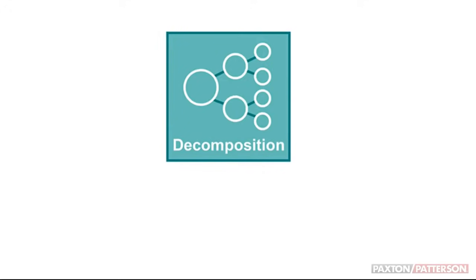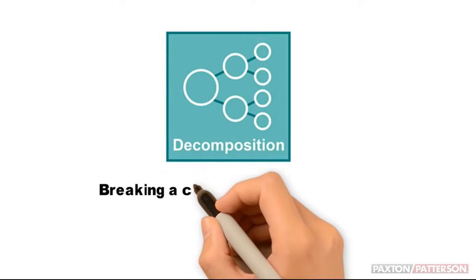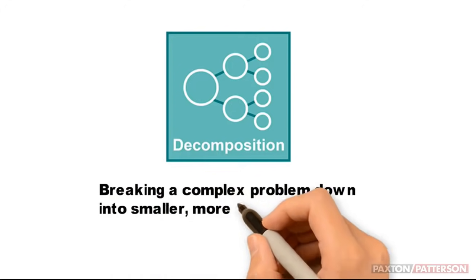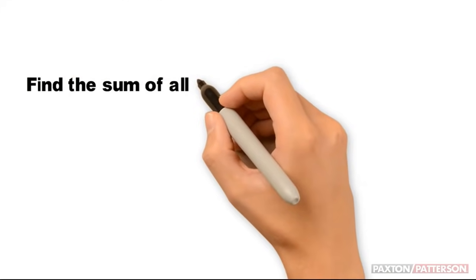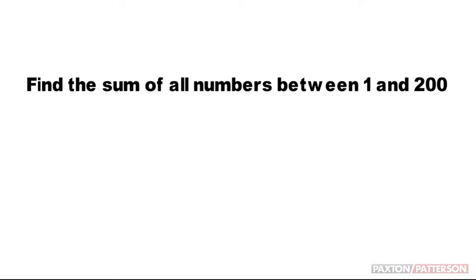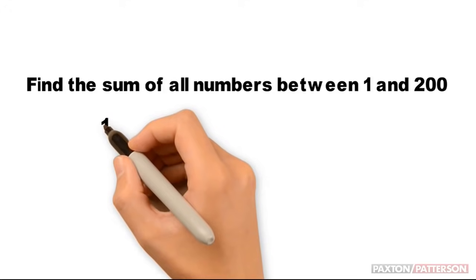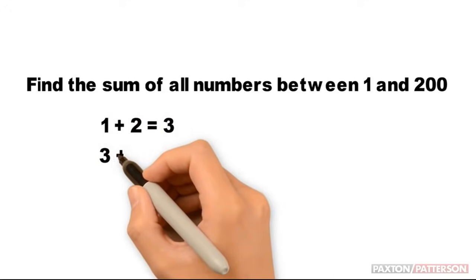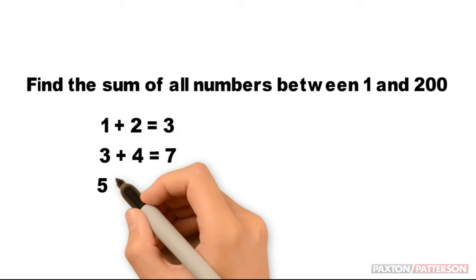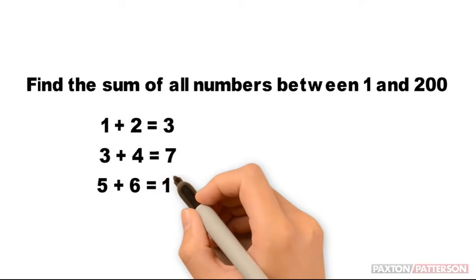Step one of the computational thinking process is decomposition. Decomposition involves breaking a complex problem down into smaller, more manageable parts. For example, take this math problem: find the sum of all numbers between 1 and 200. How can we break this problem down into smaller equations? 1 plus 2 equals 3. 3 plus 4 equals 7. 5 plus 6 equals 11.